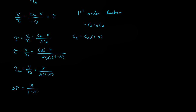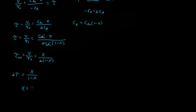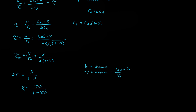If we rearrange and solve for X, we get X equals tau·K all divided by (1 plus tau·K). So if you know K and you know tau — where tau is the volume divided by the volumetric flow rate — and if both the volume and volumetric flow rate are known, you can solve for the conversion of a CSTR for a first-order reaction.